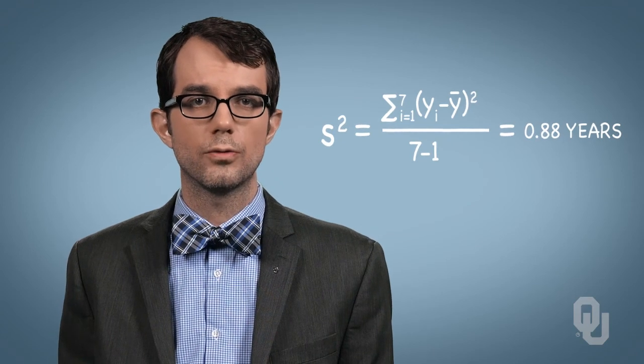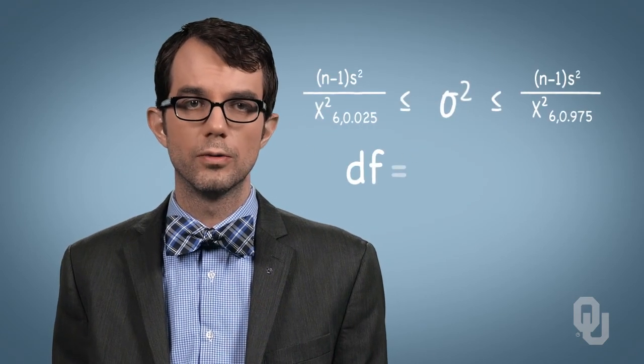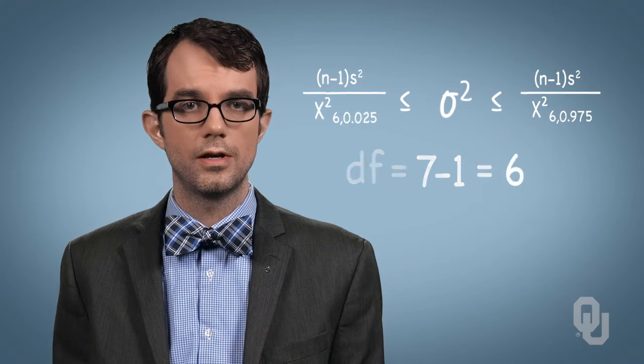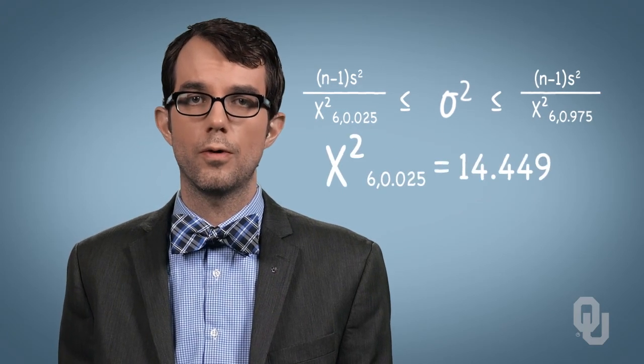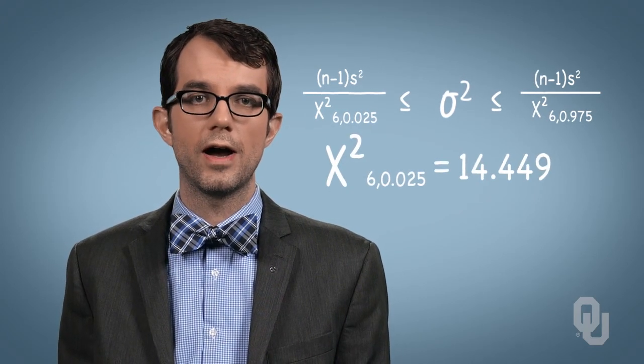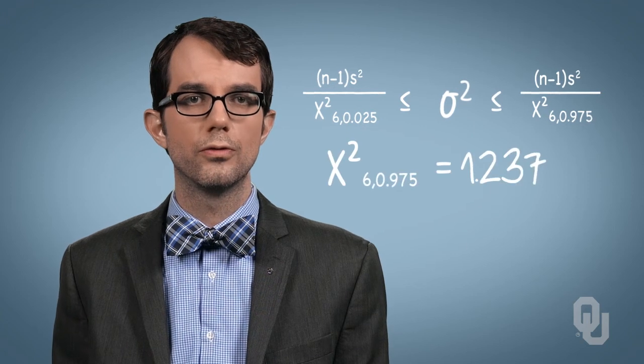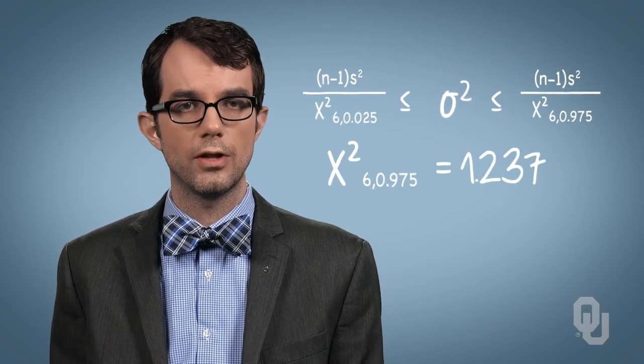We first need the chi-square values for degrees of freedom equals seven minus one, or six. These values are 14.449 for 0.025 in the upper tail, and 1.237 for 0.025 in the lower tail.